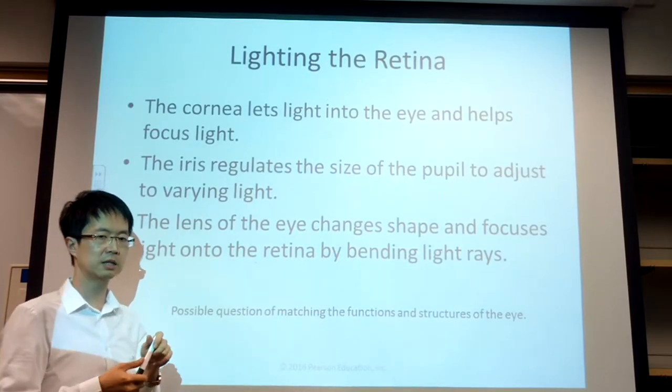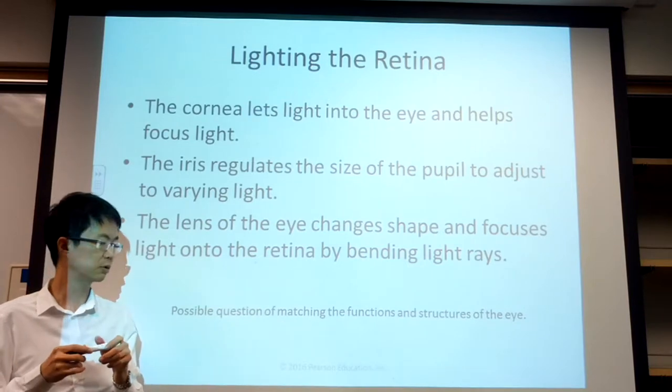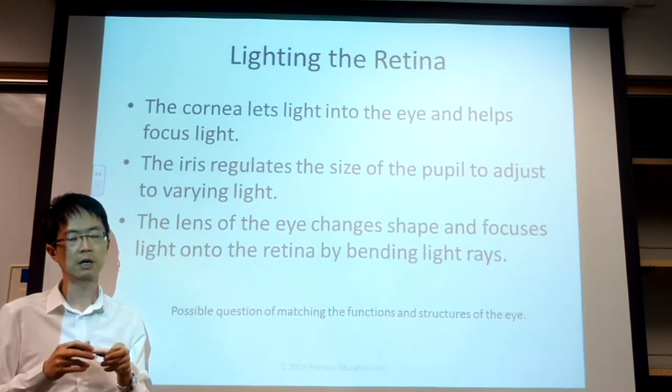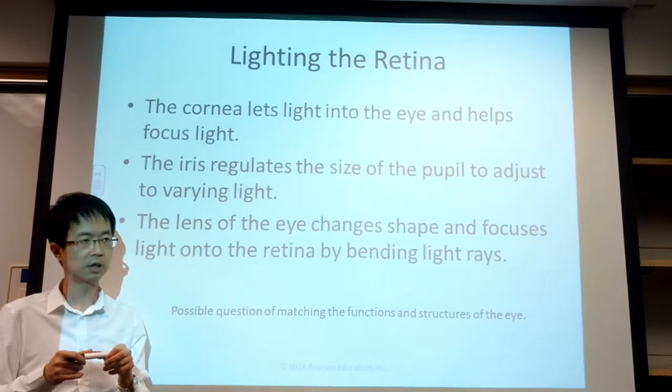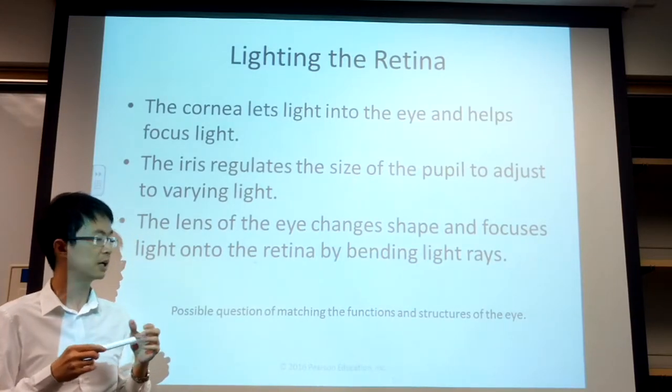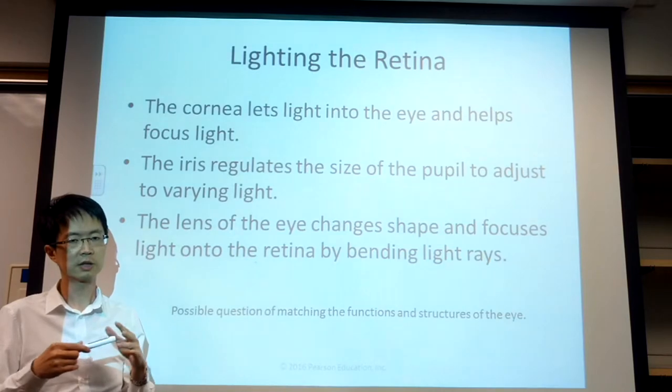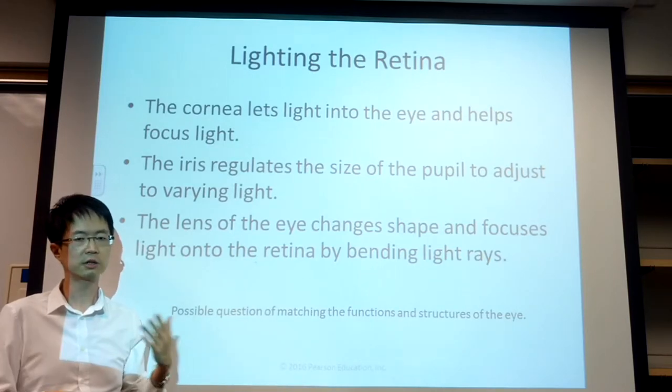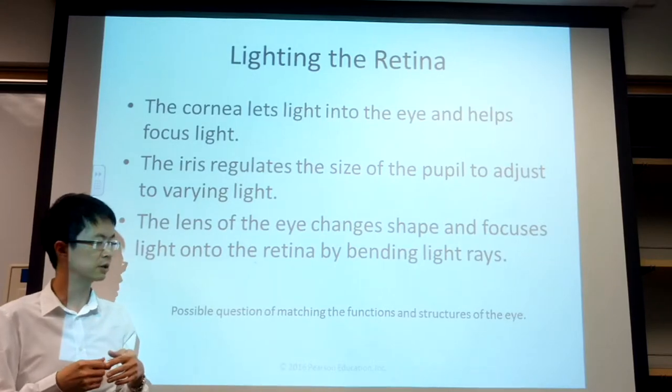If the lens gets cloudy, what do we call this condition? You can think about this: if your lens gets cloudy and people cannot see things clearly, what do we call this condition? Many old people get this condition.